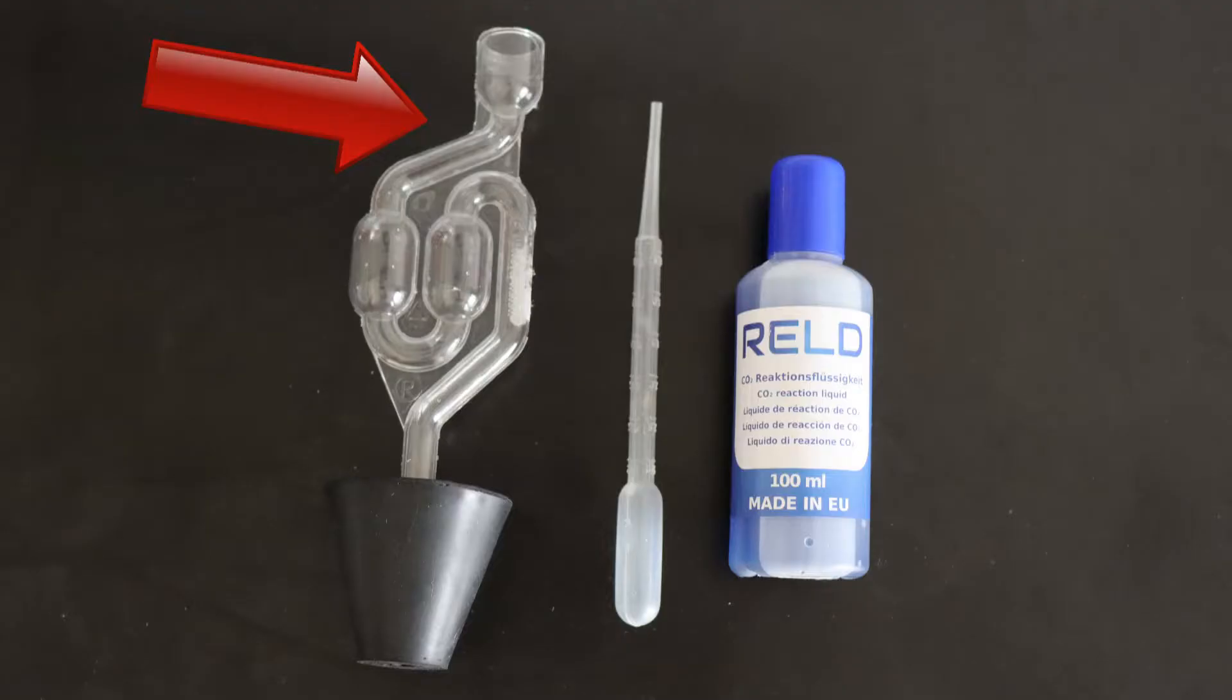So let's have a look at the kit. It includes this transparent plastic tube, this rubber bung connected to the bottom of the tube, this carbon dioxide reaction fluid, and this pipette.